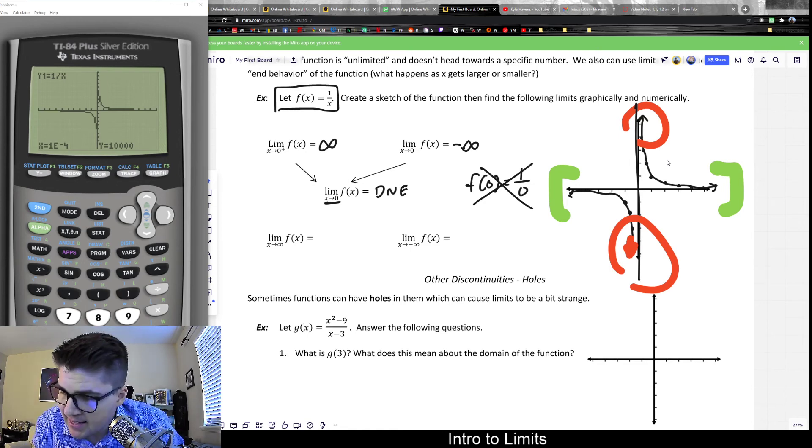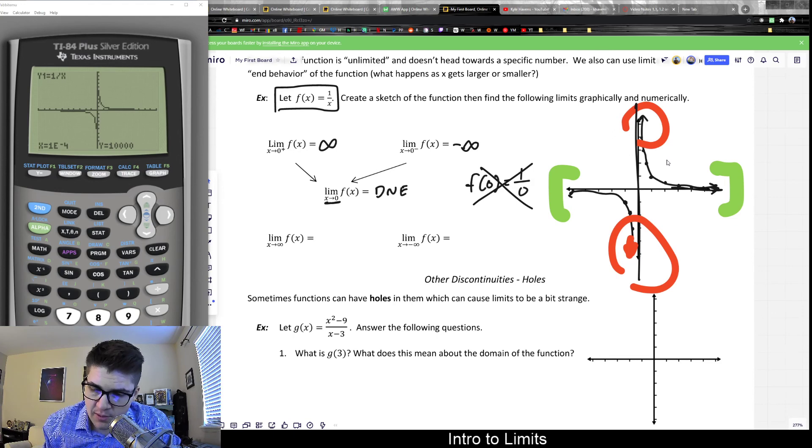But basically, as X is headed, again, I can think about that like this, as X heads towards infinity, meaning as I move to the right on my graph, what's happening is it's headed towards 0. It's flattening out. We discussed this one earlier. But the limit towards infinity, or basically as I move to the right on the graph in an infinite manner, is 0. And as I move to the left, it is also 0. Now, notice that these are not, like negative infinity and positive infinity are different.